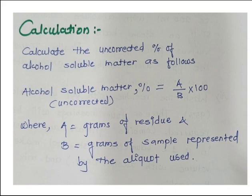Finally, calculate the uncorrected percentage of alcohol soluble matter, which equals a divided by b multiplied by 100, where a is the grams of residue obtained and b is the grams of sample represented by the aliquot used. This gives the amount of substance soluble in alcohol from soaps and detergents.